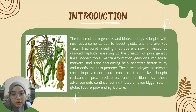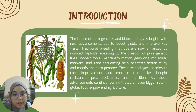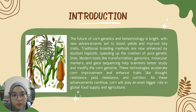The future of corn genetics and biotechnology is bright, with new advancements set to boost yield and improve key traits. Traditional breeding methods are now being exchanged by double haploid, speeding up the creation of pure genetic lines. Modern tools like transformation, genomic and molecular markers, and gene sequencing help scientists better study and modify the corn genome. These technologies accelerate corn improvement and enhance traits like drought resistance, pest resistance, and nutrition.